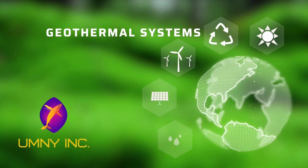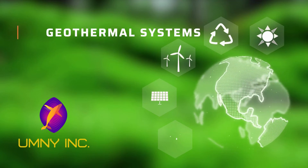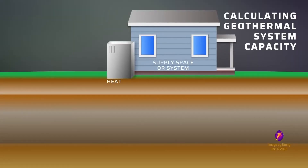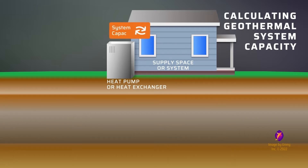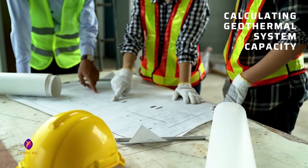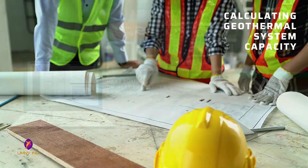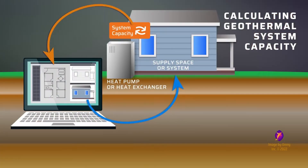Geothermal systems are a great way to deliver renewable and efficient heating and cooling to a space such as a building or a system such as a domestic hot water tank. This energy may be transferred to the target area by a ground source heat pump or a heat exchanger. The amount of usable thermal energy this equipment supplies is called the system capacity. To design a reliable geothermal system, this system capacity needs to be accurately predicted before it is even built, so that the equipment can be sized properly for the needs of the supply space or system.